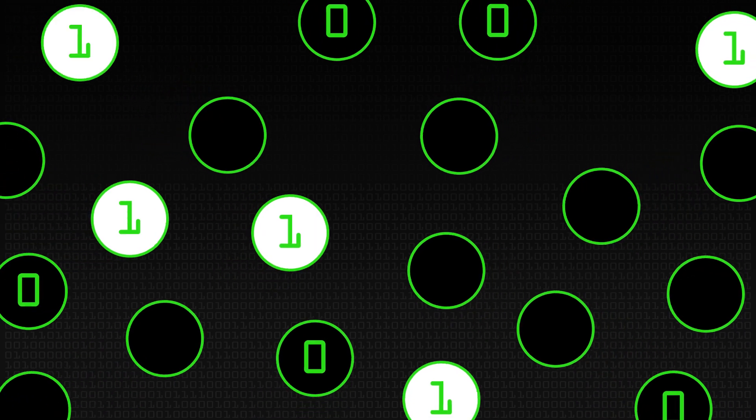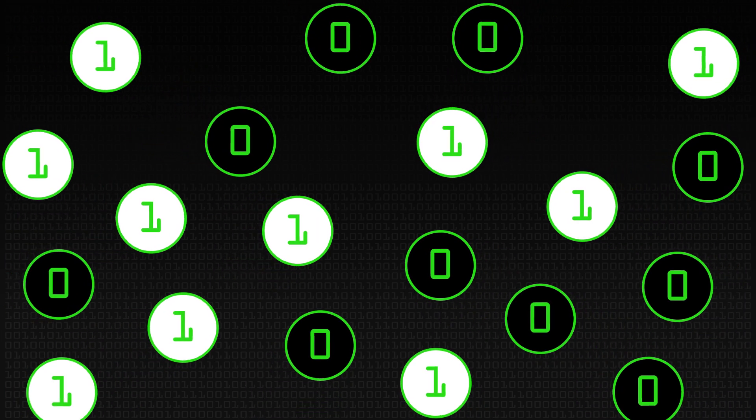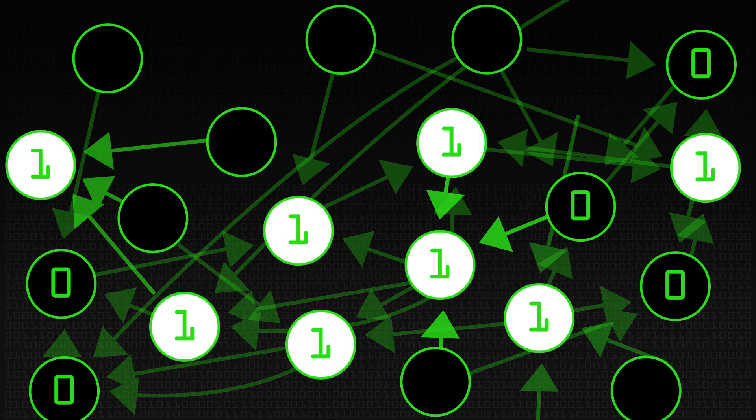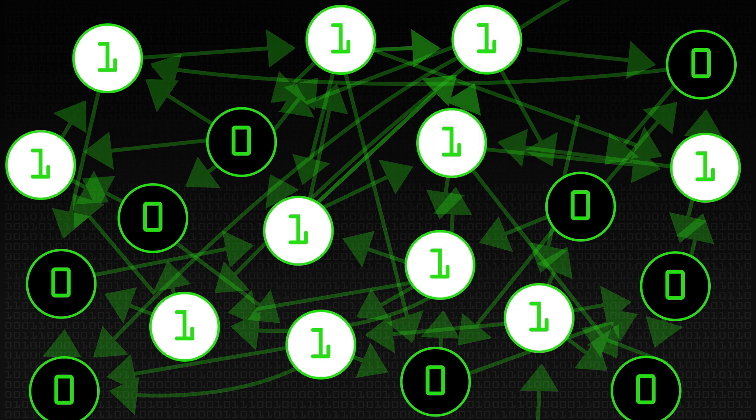How does it work then? A random Boolean network can be described as a set of 20 nodes, each of which has a Boolean state attached to it. For any given node, its Boolean state is determined by connections to other nodes within the network. So each node's behaviour is determined by the other nodes in the network, like a complex interacting system.